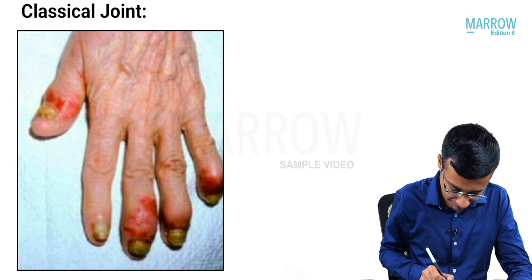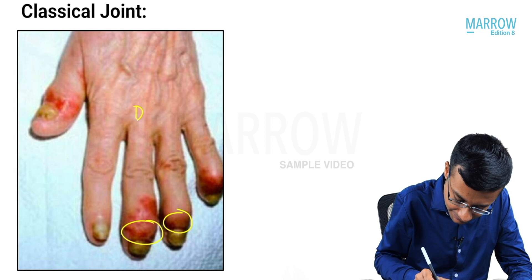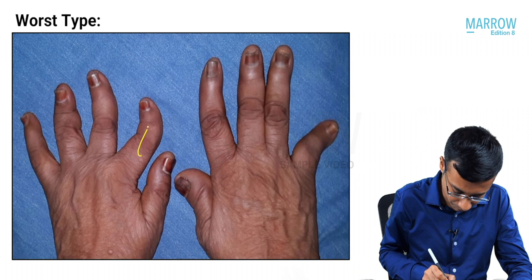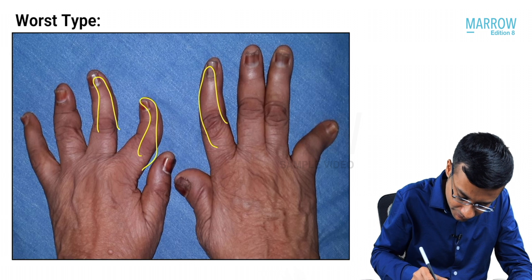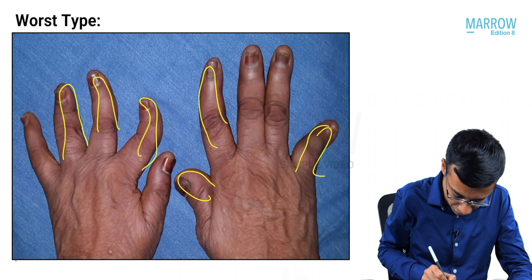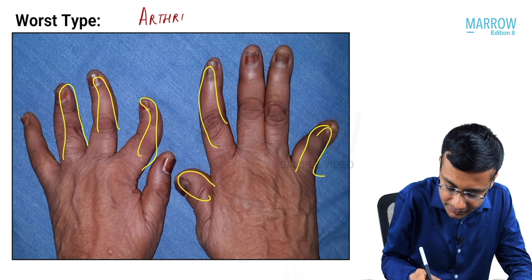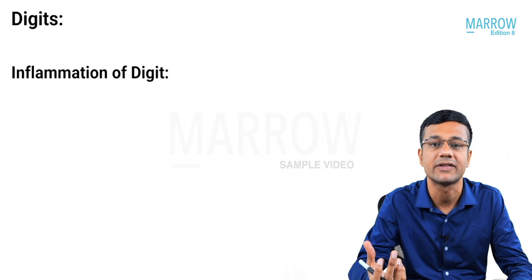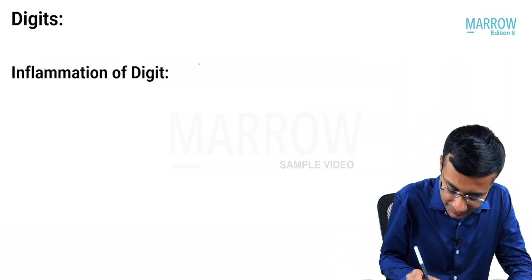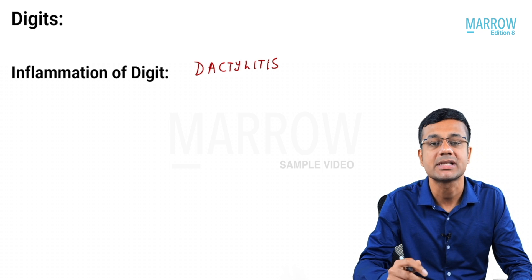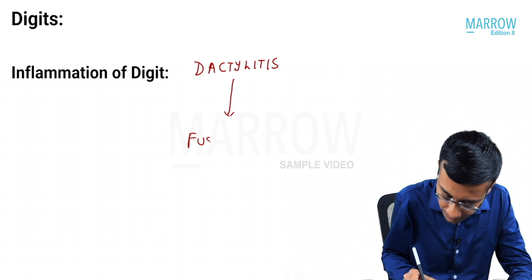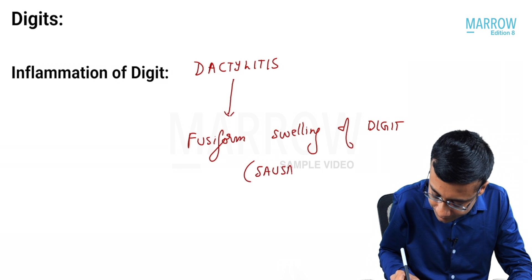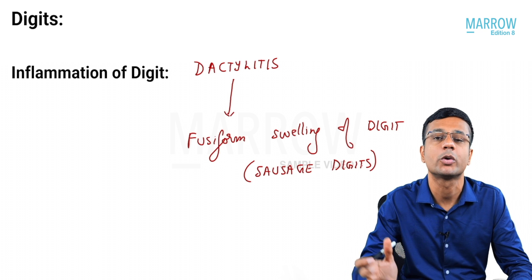The classical joint involved in psoriatic arthropathy is the distal interphalangeal joint. The worst type of psoriatic arthropathy, where joints are totally mutilated due to destruction, is called arthritis mutilans. Inflammation of the digit is called dactylitis, and in psoriasis, dactylitis produces fusiform swelling of the digit referred to as sausage digits.